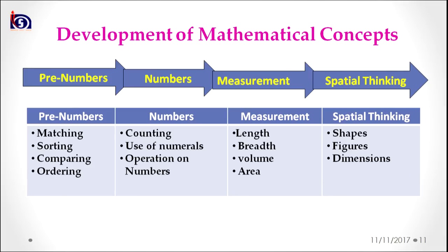Here is a representation on the slide showing how mathematical concepts get developed. After pre-number concept, we attain number concept. After attaining number concepts, we attain measurement concept. And after learning measurement concepts, we gain spatial thinking. When we talk about pre-number concepts, they include four kinds of concepts: the first is matching, the second is sorting, the third is comparing, and the fourth is ordering.